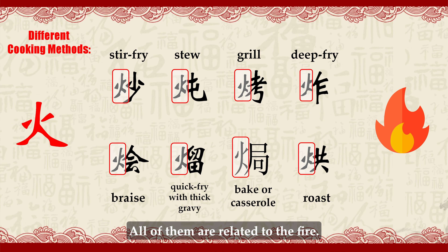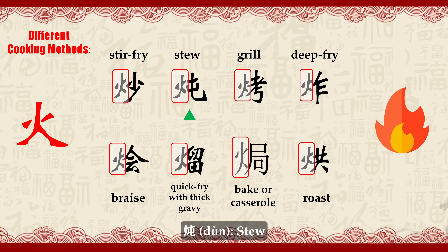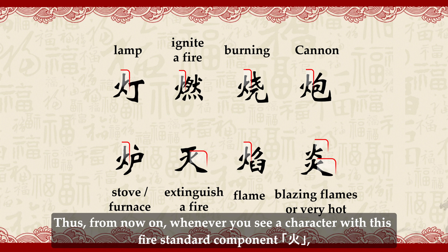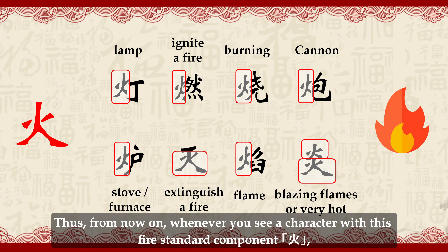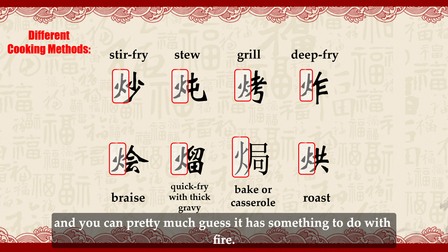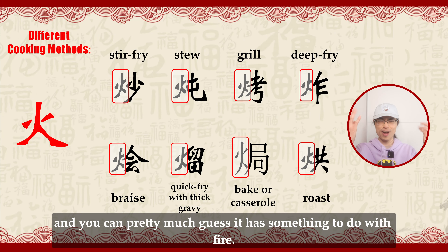Yán (焰), flame. Yán (炎), blazing flames, or meaning very hot. This page shows multiple cooking methods — all of them related to fire: Chǎo (炒) stir fry, Dùn (炖) stew, Kǎo (烤) grill, Zhá (炸) deep fry, Huì (烩) braise, Liū (溜) quick fry with thick gravy, Jū (焗) bake or casserole, Hōng (烘) roast. From now on, whenever you see a character with this fire standard component, you can pretty much guess it has something to do with fire.